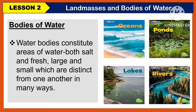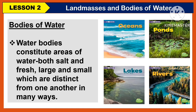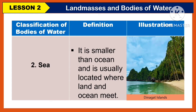In bodies of water, water bodies constitute areas of water, both salt and fresh, large and small, which are distinct from one another in many ways. One classification of bodies of water is the ocean. It is a continuous body of salt water that covers more than 70% of the Earth's surface. Another classification is the sea. A sea is smaller than an ocean and is usually located where the land and the ocean meet.